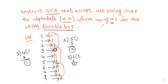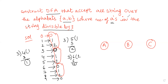So now, the number of A's divisible by 3 means we have 3 remainders. Let me label the 1st remainder as state A, the 2nd remainder as state B, and the 3rd remainder as state C. Remember, when the remainder is 0 that state will be accepted. Now, I am going to draw the diagram.